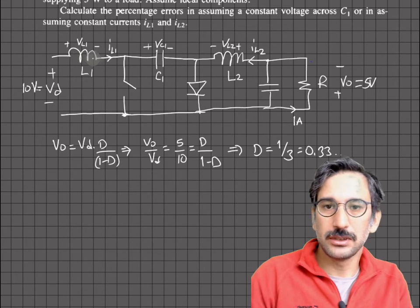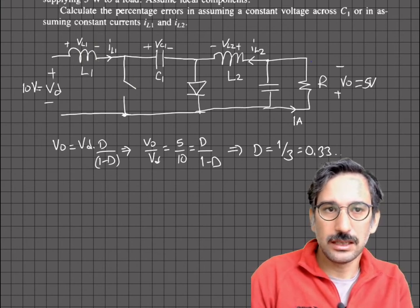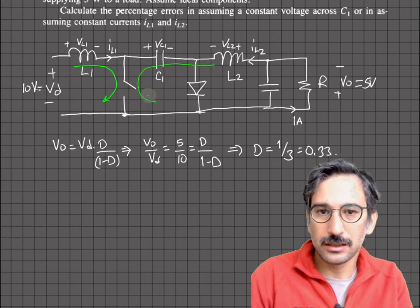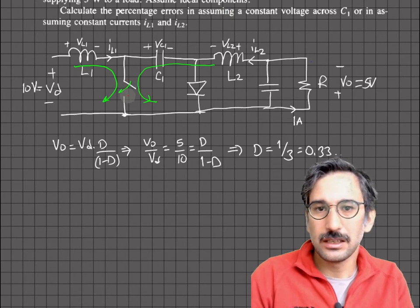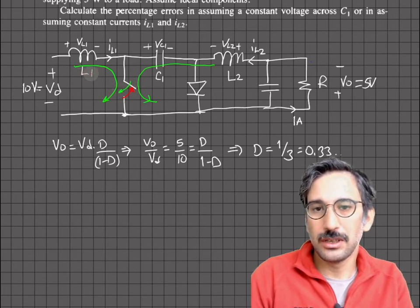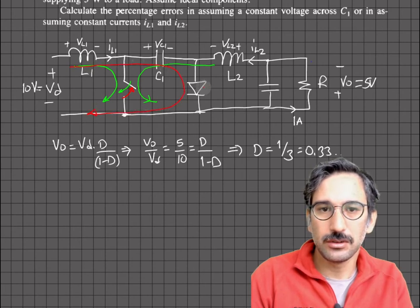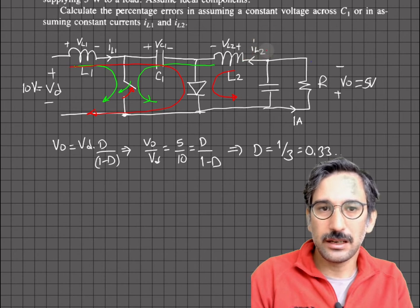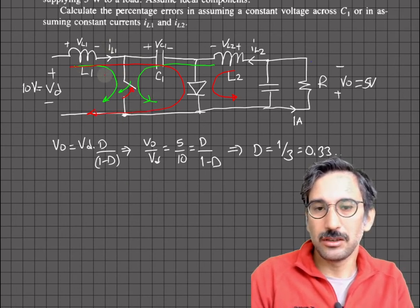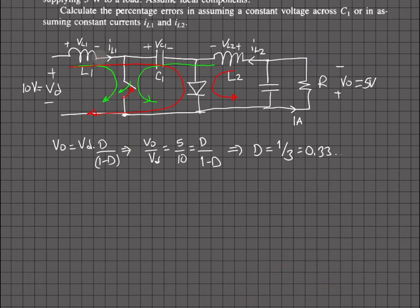So for one third of the time the transistor is closed. When it is closed, current flows in one direction. When the transistor is off — like a boost converter in that stage — the inductor current flows through the other path. The green arrows show switch-on operation and the red arrows show the switch-off operation.